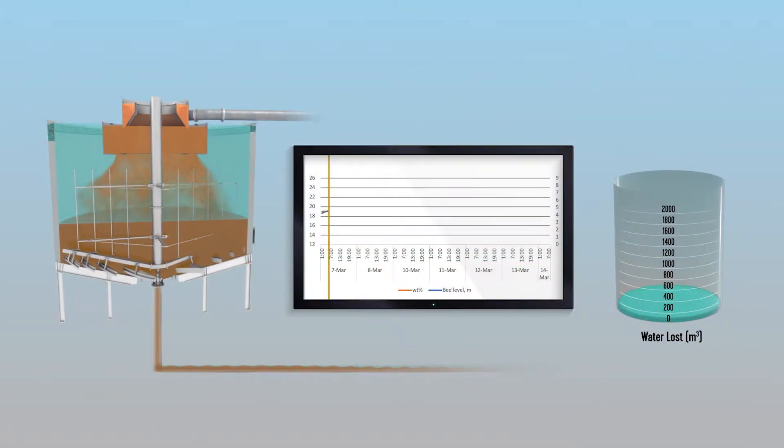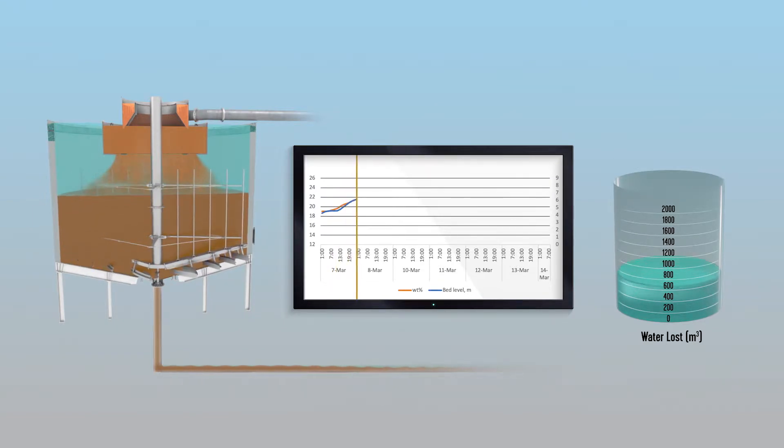Most thickeners lack sufficient control. Consistent operation optimizes underflow density, flocculent dosage, and water recovery to significantly reduce operating costs.